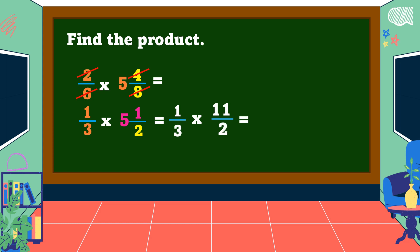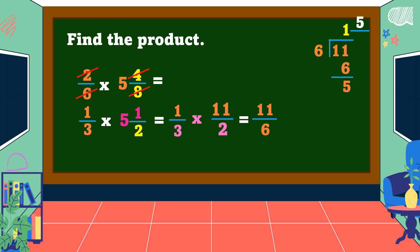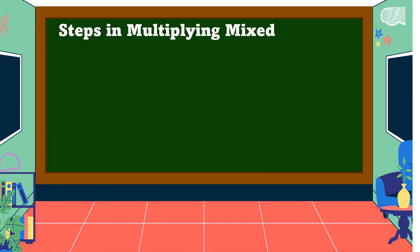Next, multiply both numerators and both denominators: 1 times 11 is 11, and 3 times 2 is 6. The result is 11/6, which is an improper fraction. To reduce it, divide the numerator by the denominator: 11 divided by 6 is 1 remainder 5 — so the whole number is 1, the remainder 5 is the numerator, and 6 is the denominator. Therefore, 11/6 equals 1 and 5/6, which is our final answer.